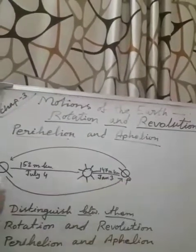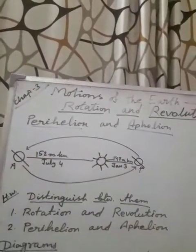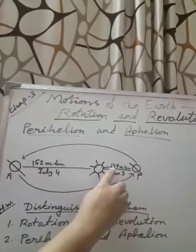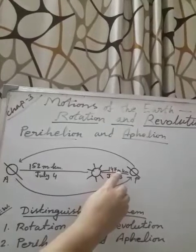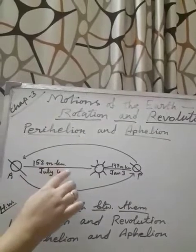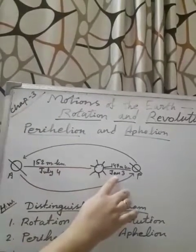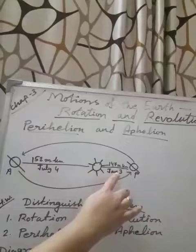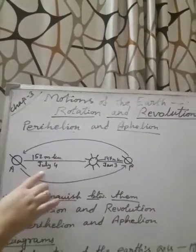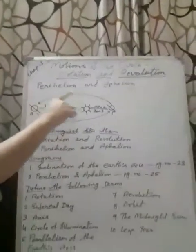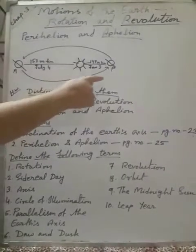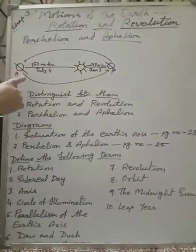And when it goes far from the sun, this situation is called aphelion. In short, I am writing P here and A here. And during this time, the distance between sun and the earth is this one, 147 million kilometer. And here, it is 152 million kilometer. And the specific date when we are very close to sun is 3rd January. And when we are the furthest from the sun, that is 4th July. So, this situation is called perihelion and aphelion. And this situation develops due to revolution of earth.